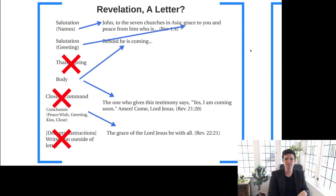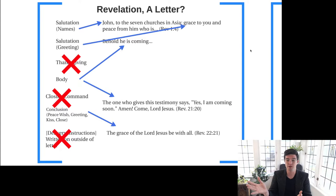When it comes to Revelation, we do have the start of these features — a salutation with the name of the author and the name of the recipients, namely the seven churches in Asia, and we do have a greeting and a conclusion at the very end of the document. But everything else about a letter is missing; it sort of starts as a letter and then moves on to doing something else altogether.